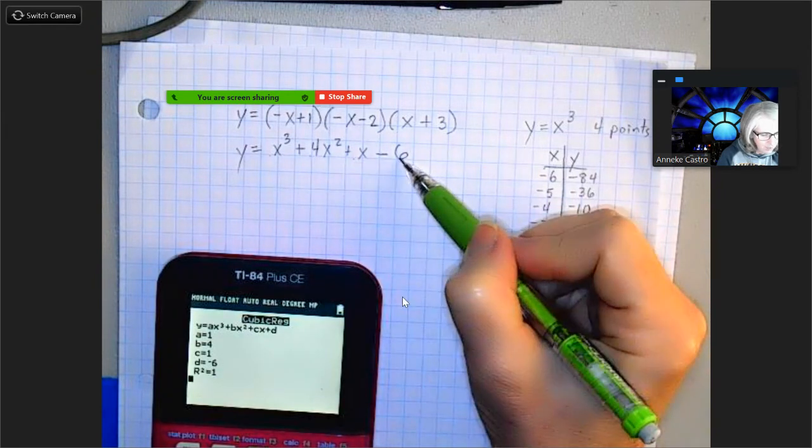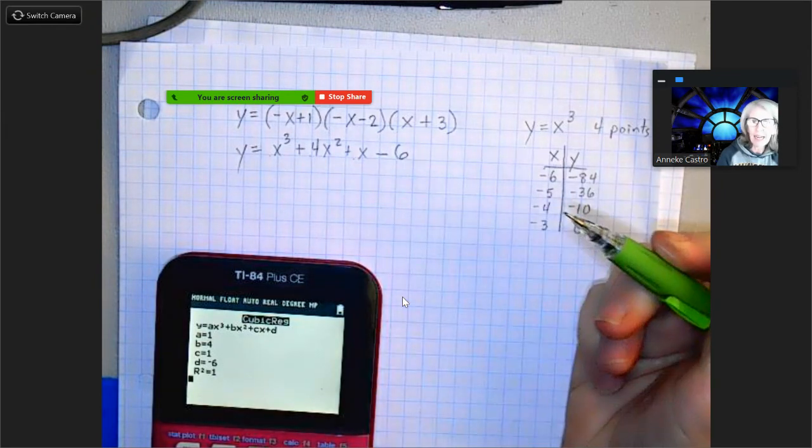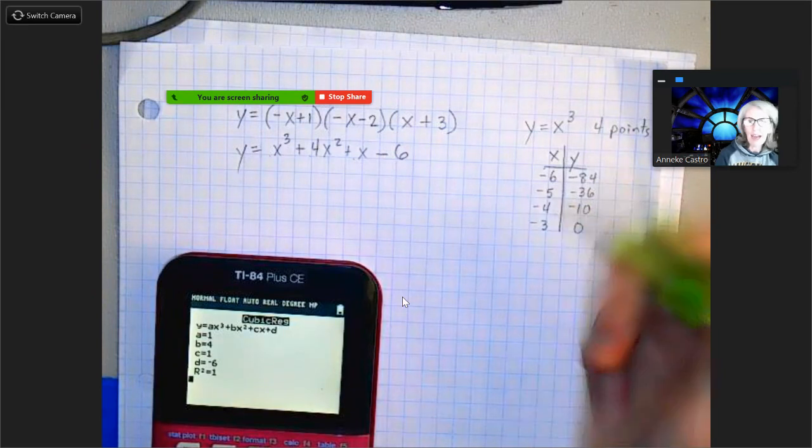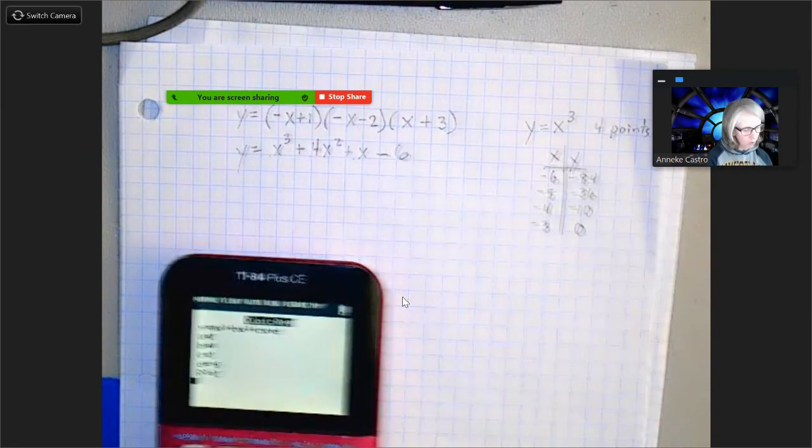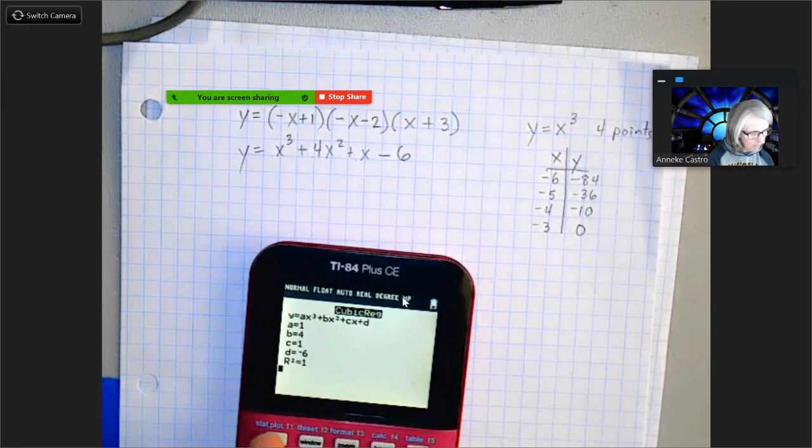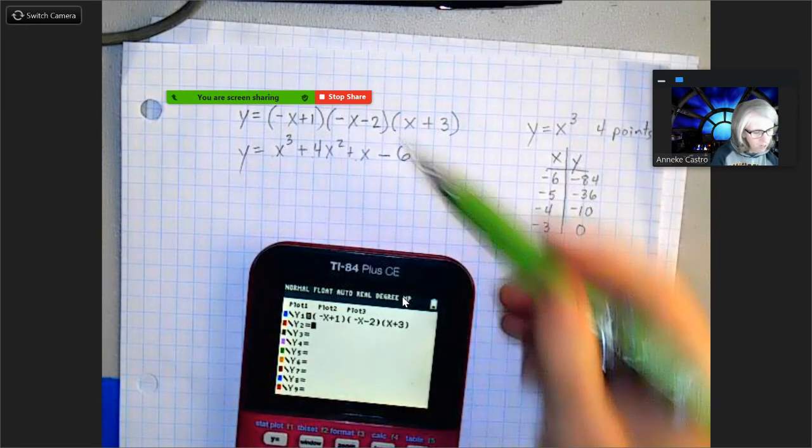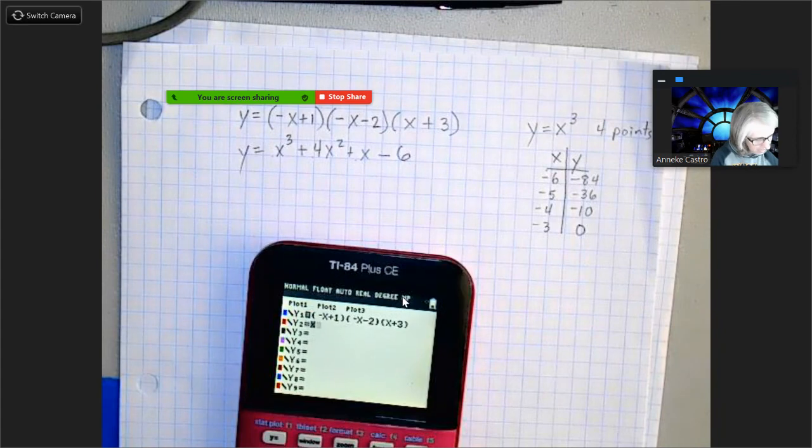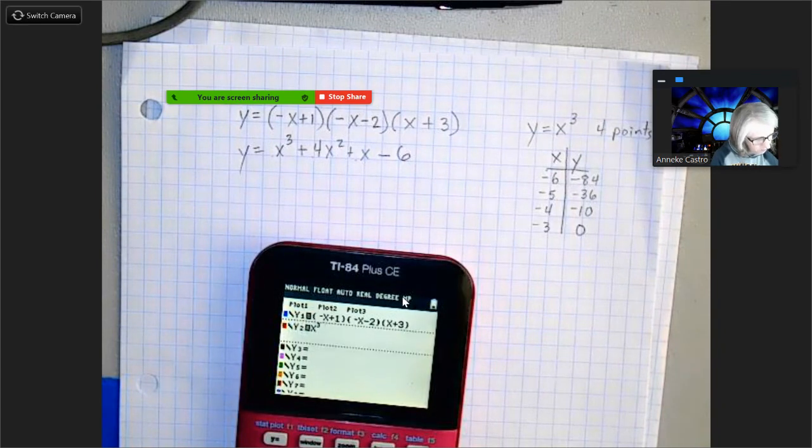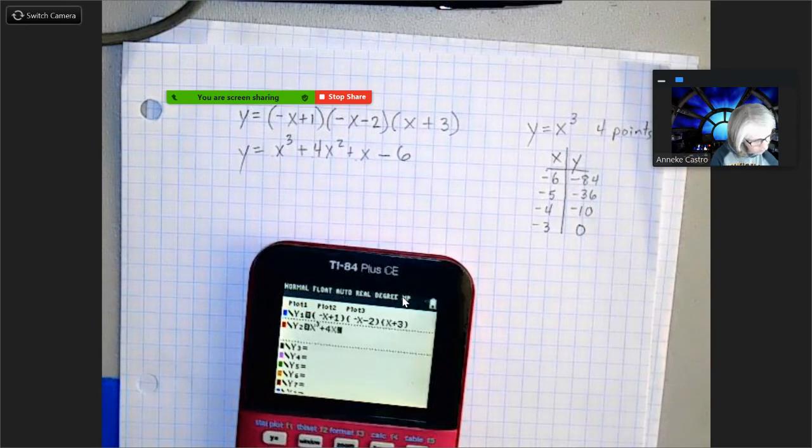Now to make sure that that actually works, we could go ahead and put it back into our graphing calculator and make sure it matches on top of the first one. So I'm going to go ahead and put this in: x cubed plus four x squared plus x minus six. Okay, so I've entered that in.